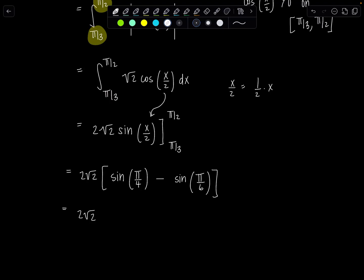So we've got 2√2 times sin(π/4). Do you know what it is? It's √2/2. I'm going to write it as 1/√2, what it was before we rationalize—it'll be easier to clean up. Minus sin(π/6) which is 1/2.